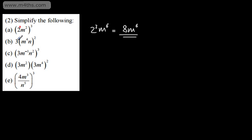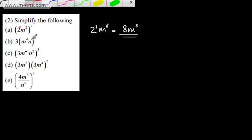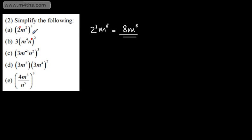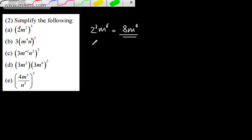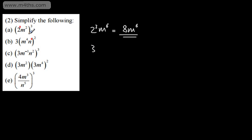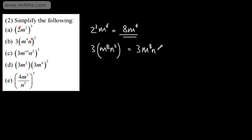Here, I've got 3 on the outside of the bracket, m to the 4th, and n to the 1st power. I'm just going to put a little 1 here, because we're multiplying each of these powers by 2. The 3 stays where it is — it is not raised to the power of 2. Then we have m to the power of 4 times 2, which is 8, and n raised to the power of 2 times 1, which is 2. So we write this without the bracket as 3m to the 8th n squared.